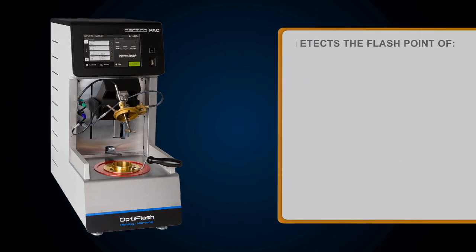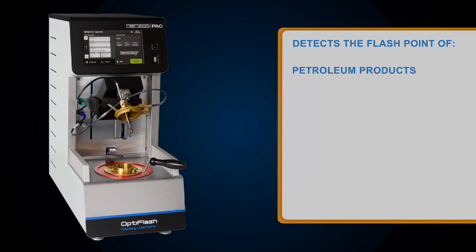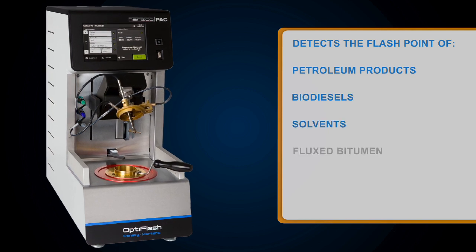The OptiFlash-Penske-Martens model detects the flashpoint of petroleum products, biodiesels, solvents, and fluxed bitumen.